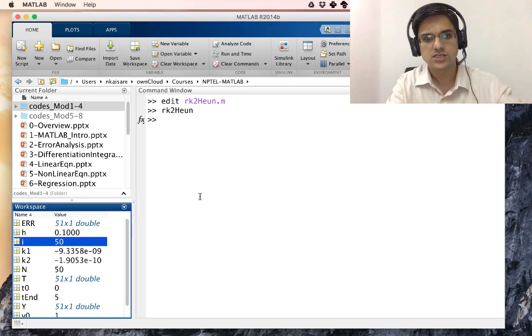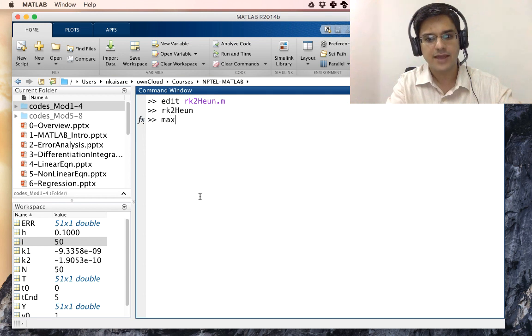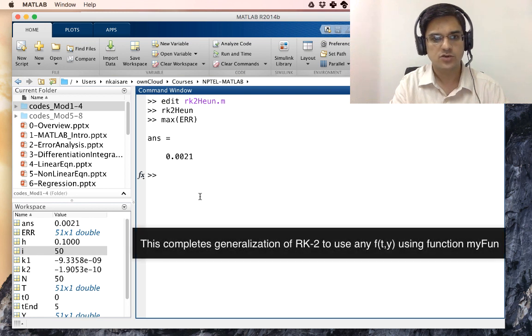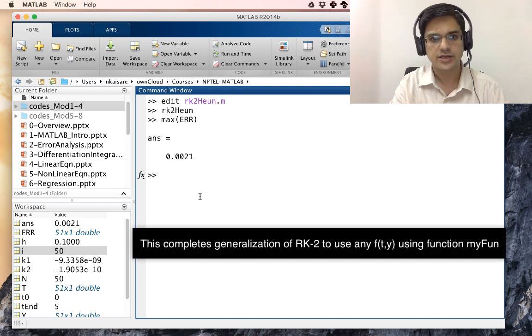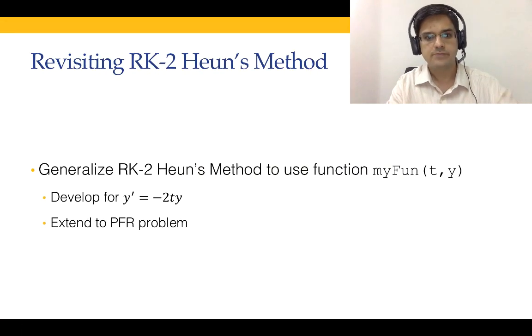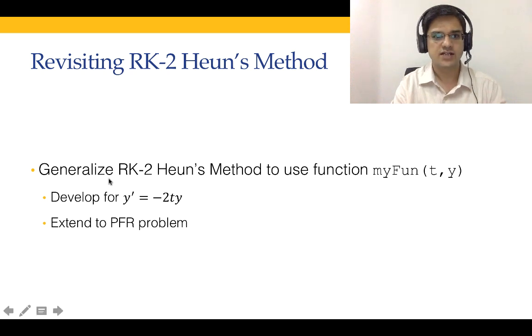Let us also look at max error. Max error is 0.0021 similar to what we had gotten earlier in lecture 7.2. So what we have done is we have generalized rk2 Heun's method to use function MYFUN. Now what we are going to do is to extend it to the PFR problem.